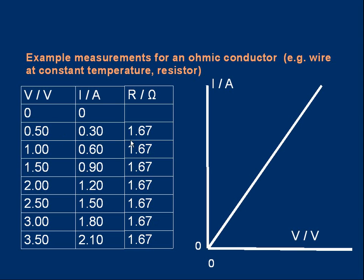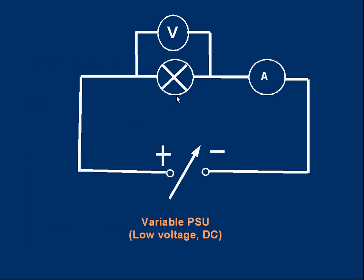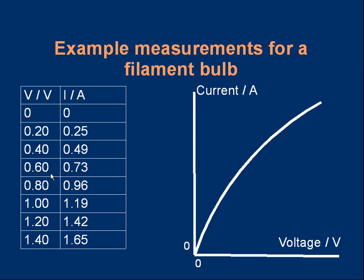Now let's look at a slightly more difficult problem. Suppose we repeat the measurements but using a filament bulb — we apply different voltages and measure the current. A typical set of results would look like this. If we plot current against voltage we don't get a straight line through the origin; we get a curve. This tells us that the filament bulb is not obeying Ohm's law — the current is not proportional to the voltage.